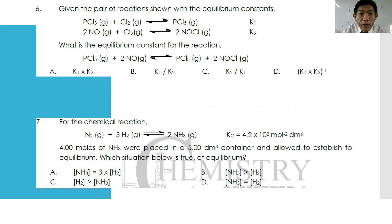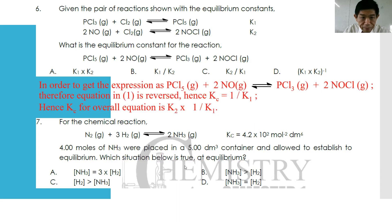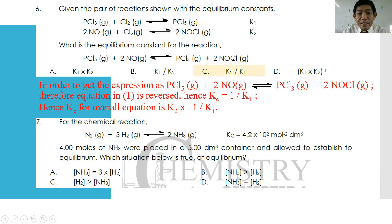For question number six: given the pair of reactions — PCl₃ + Cl₂ → PCl₅ with equilibrium constant K₁, and 2NO + Cl₂ → 2NOCl with equilibrium constant K₂ — what is the equilibrium constant for PCl₅ + 2NO → PCl₃ + 2NOCl? You must manipulate the equations by expressing each K respectively. Reverse the first equation so PCl₅ is the reactant, and keep the second equation unchanged. The result is K₂/K₁. The answer is C.